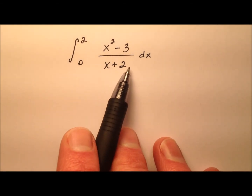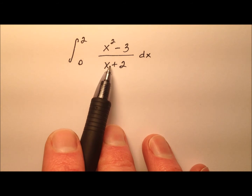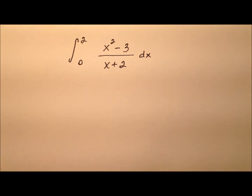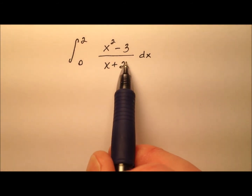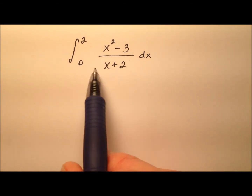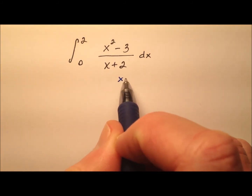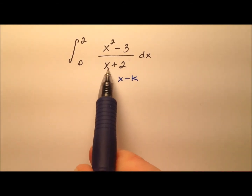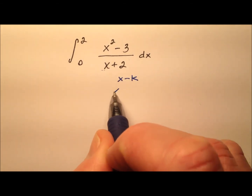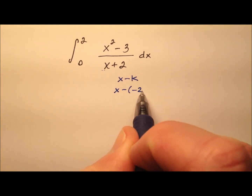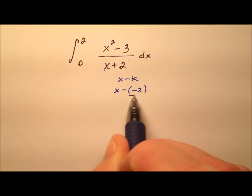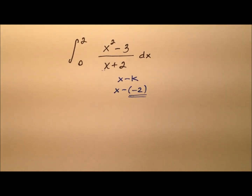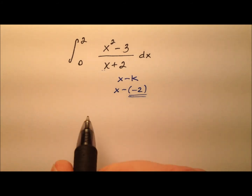Because our denominator is just x plus 2 — a linear binomial — synthetic division sounds like a really good way to go. Remember with synthetic division, our divisor needs to be in the form x minus k. So we can rewrite x plus 2 as x minus negative 2, and we see that our k value will be negative 2.